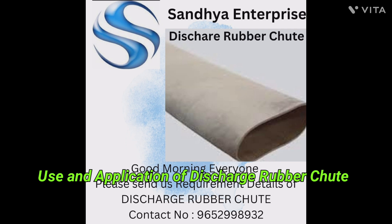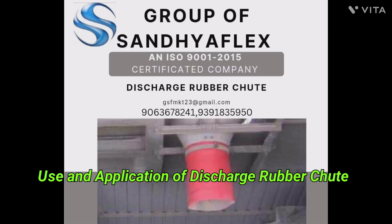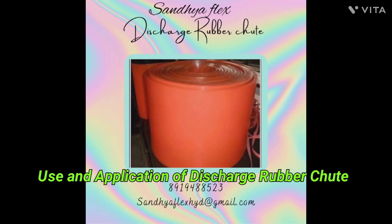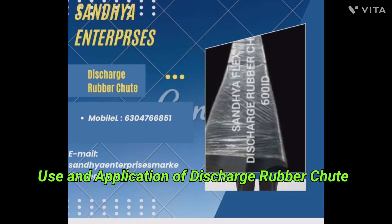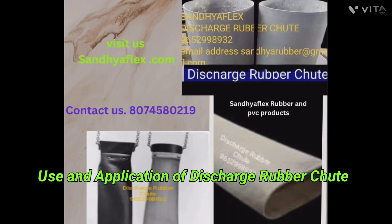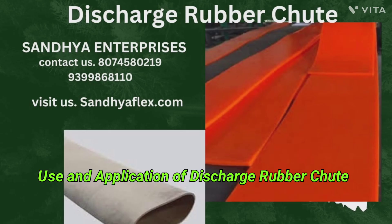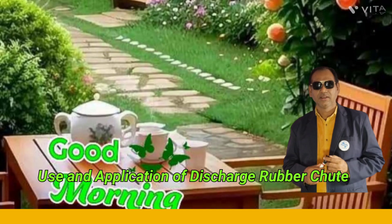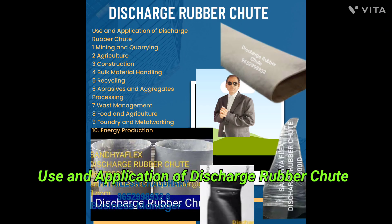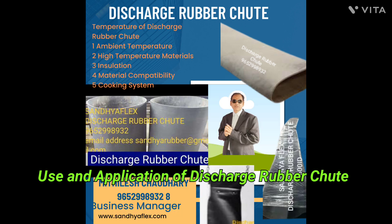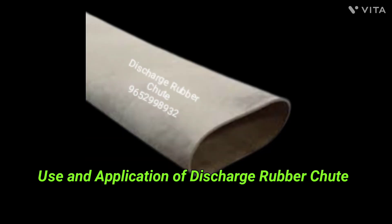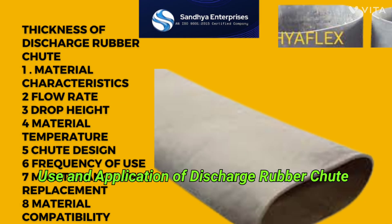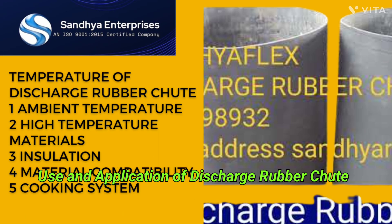In mining operations, rubber chutes are used to direct the flow of rocks and other materials from crushers, conveyors, and screens to stockpipes and processing equipment. They help reduce material failures, control dust and emissions, and protect conveyor belts and other equipment from damage due to abrasive material.